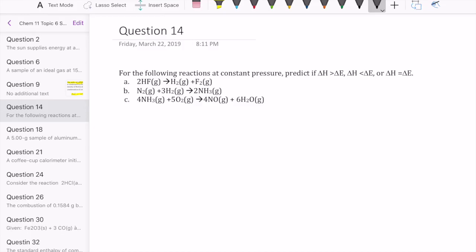Okay, let's take a look at question 14, topic set 6. This question asks us to compare the value of delta H to delta E for each of the reactions given here.